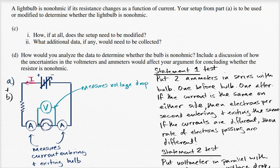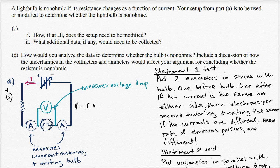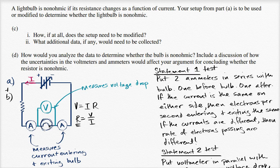We want to be able to change the current going through the light bulb and then see how the resistance changes. With the setup right over here, it's very easy to measure resistance. We know that voltage is equal to current times resistance, or that resistance is equal to voltage divided by current. So if we know the current going through a light bulb and we know the voltage across it, we can always figure out the resistance of the light bulb. Our setup is actually very good for figuring out the resistance.